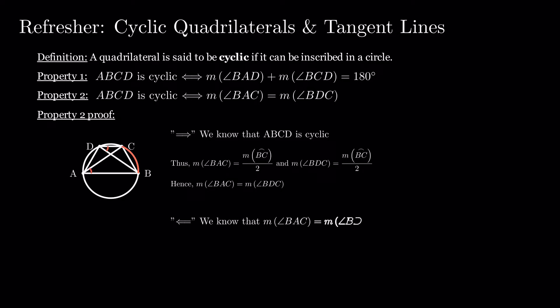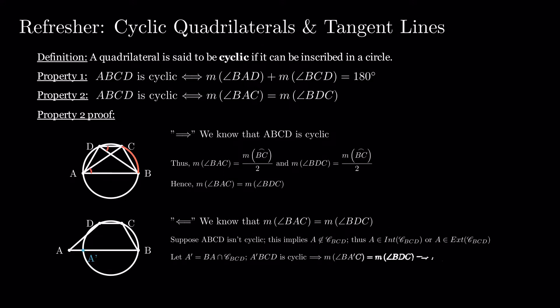Proving the second implication, we know that BAC and BDC have equal measures. Just as we did before, we assume that ABCD is not cyclic. We select A prime the same way we did before. Using a similar approach, we get that BCA prime equals BCA, which is a contradiction. So, ABCD has to be cyclic. As before, the proof works the same way, regardless of the choice of position for A, inside or outside the circle.